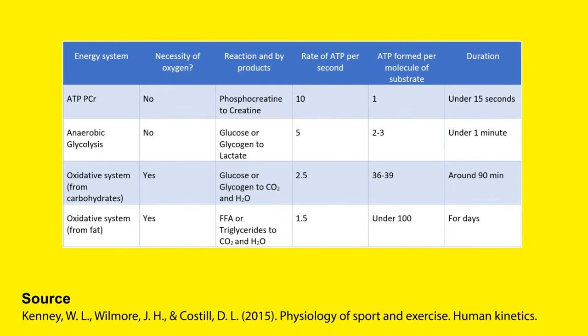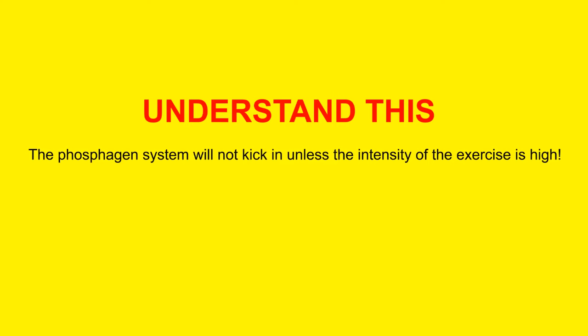There's a graph showing how the ATP-PCR system's rate of ATP per second is so much higher than the other systems — 10 ATP units produced per second — which is why it's saved for very demanding, high intensity activity. If you've ever played Need for Speed on PlayStation, you remember pressing a button for a nitro boost that made your car super fast for a couple of seconds before it needed to recover. It's almost the same principle with the phosphagen system.